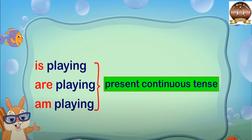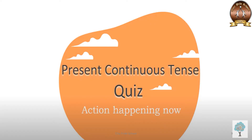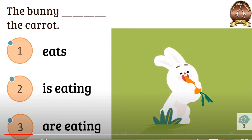Shall we play the quiz? Let's go for the quiz now — present continuous tense quiz: actions happening now. In this quiz, you can see a picture and a sentence based on the picture. You have to complete the sentence by using the correct present continuous tense.